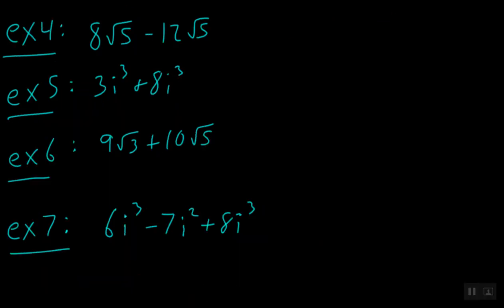Here we have example 4 where we have 8 square roots of 5 minus 12 square roots of 5. Notice, because the square root of 5 and the square root of 5, they're both the same type of radical square roots, and they both have the same number on the inside, 5, we can actually combine our like terms here. 8 minus 12 will give us negative 4 square roots of 5.